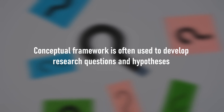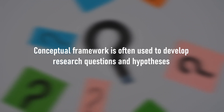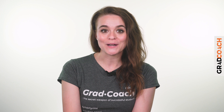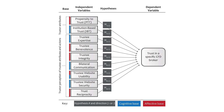Therefore, the conceptual framework is often used to develop research questions and hypotheses. Let's look at an example of a conceptual framework to make it a little more tangible. You'll notice that in this specific conceptual framework, the hypotheses are integrated into the figure — for example, see the blocks labeled H1, H2, etc. This helps to connect the conceptual framework to the rest of the document. Also, the conceptual framework makes use of different shapes, lines, and arrows to help visualize the connections and relationships between different constructs and variables.